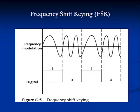When FM signals are converted into digital signals, the differing signals are conveyed as either 0s or 1s. This technique is known as frequency shift keying, or FSK — think of it as digital FM. FSK is used on some modern modems.